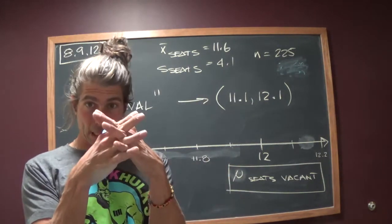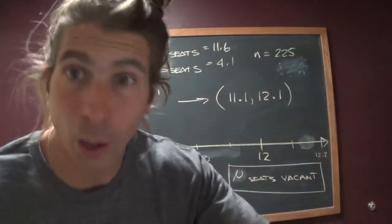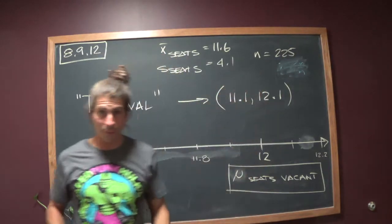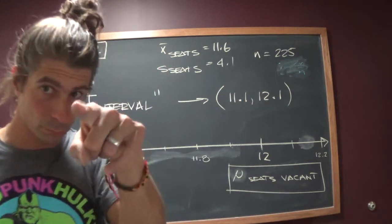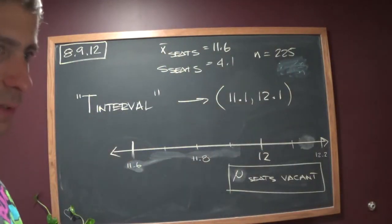Anyway, X is any one flight's number of unoccupied seats. X bar, as we talked about before, is the average of all 225 of them. Good so far? Don't worry about N minus 1. That's irrelevant. We'll come back to why that's irrelevant in a second.